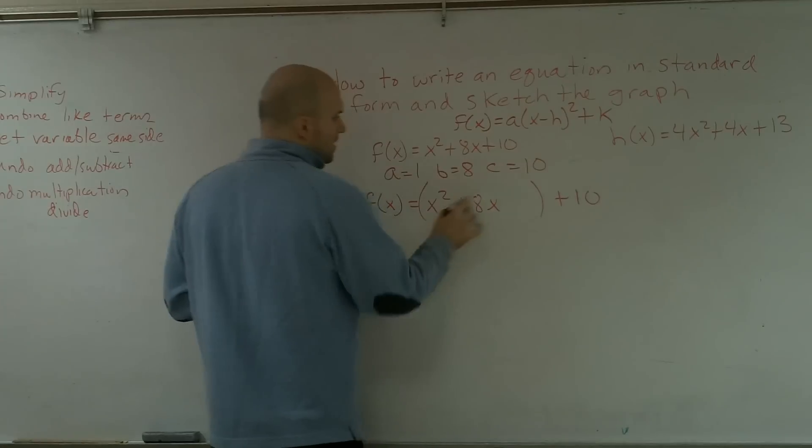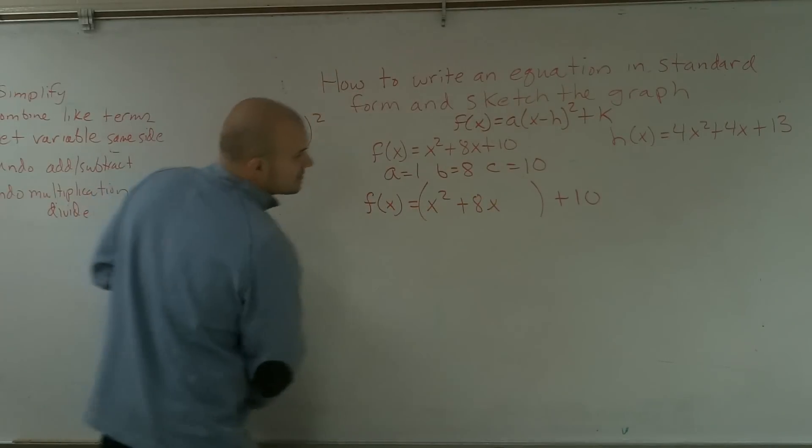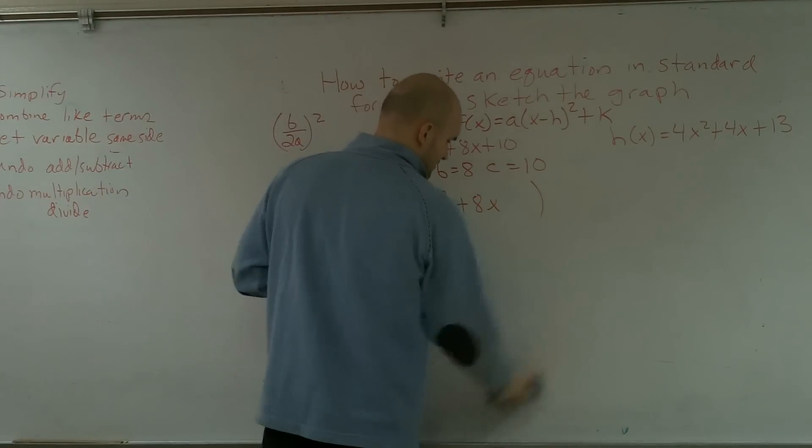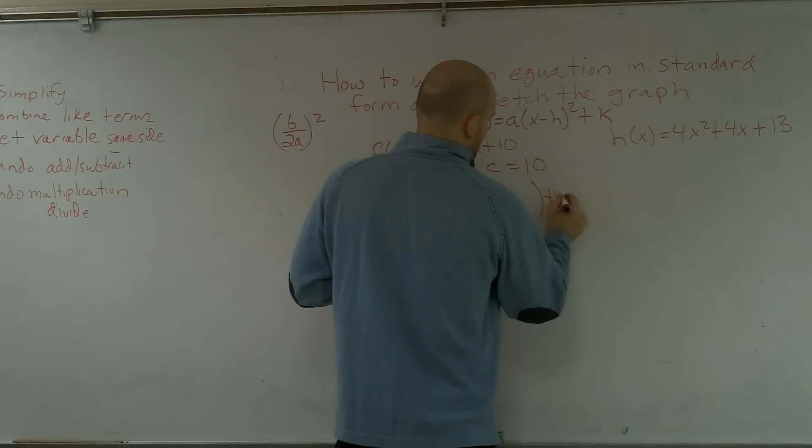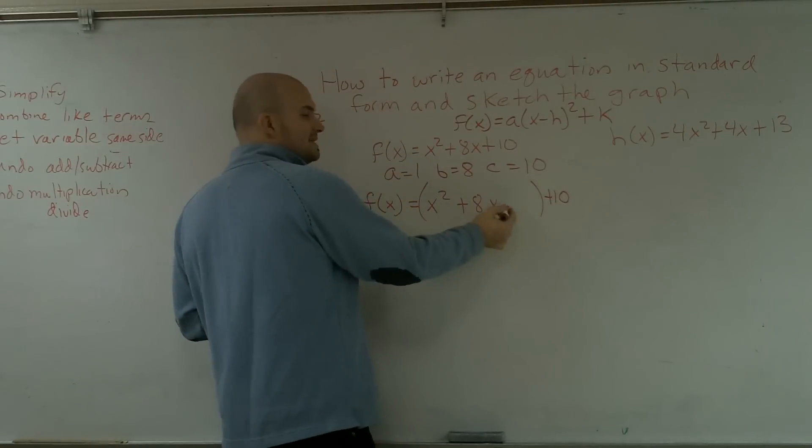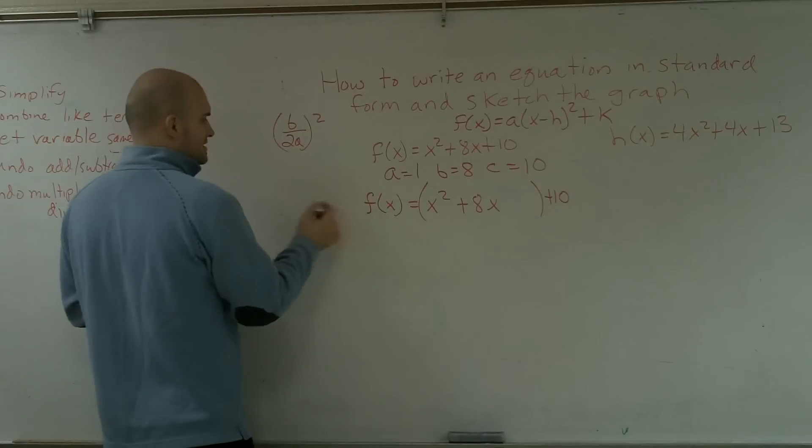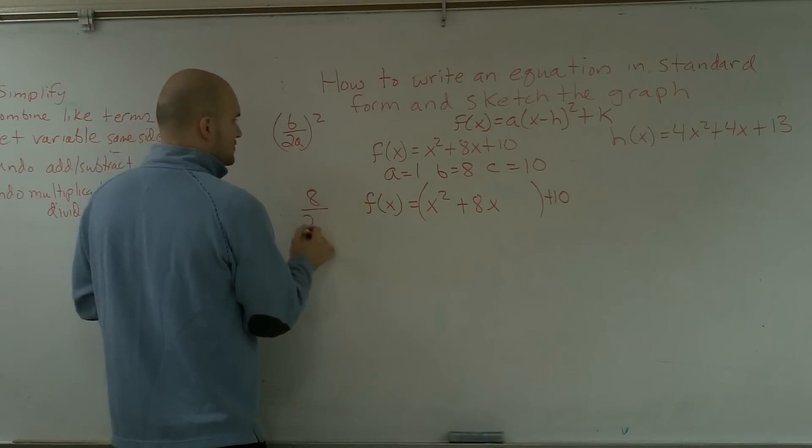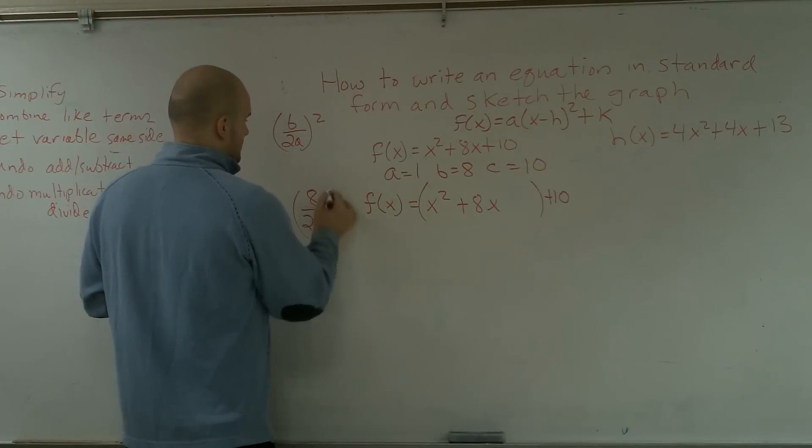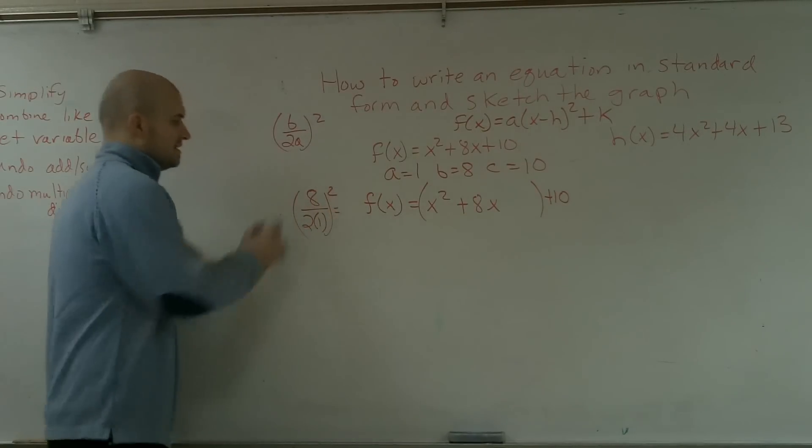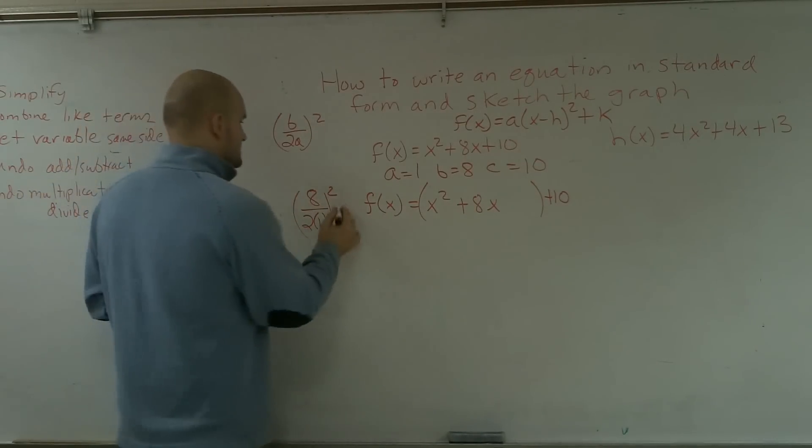Because what I want to do is find out what number do I need to add to this to make this a perfect square? And what I do is I use my formula. So I take b, which is 8, over 2 times 1 squared, and that's going to give me 8 over 2 is 4. 4 squared is 16.